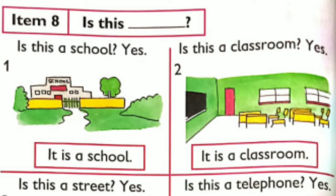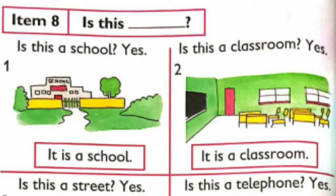Is this a school? Yes, it is a school. Is this a classroom? Yes, it is a classroom. Is this a street? Yes, it is a street. Is this a telephone? Yes, it is a telephone.